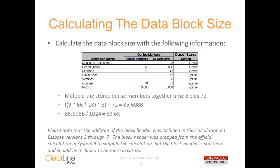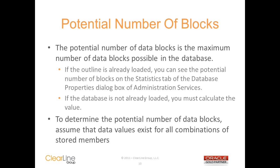Here is a simple example showing you how to calculate the size of a data block. The formula is pretty straightforward. You just need to identify the stored members in each of the dense dimensions, and then multiply them together times 8 plus 72. In this example, you'd need to multiply the 9 measures by the 66 time members and the 18 scenarios. Then take that value times 8 to convert it to bytes and add the 72-byte block header.